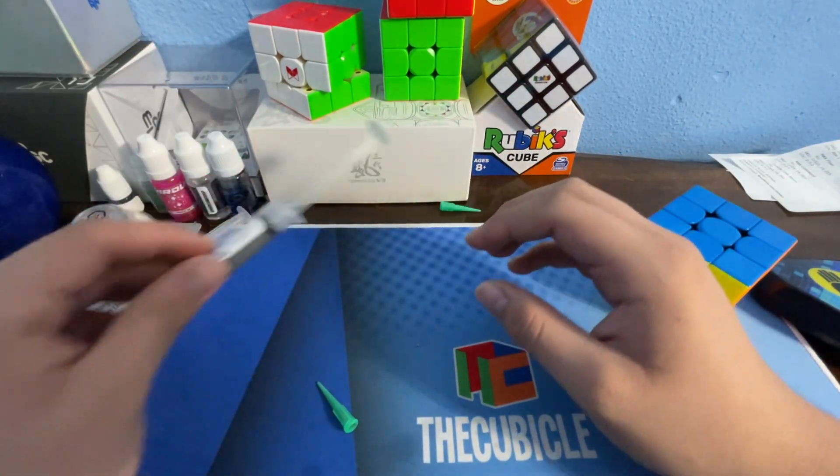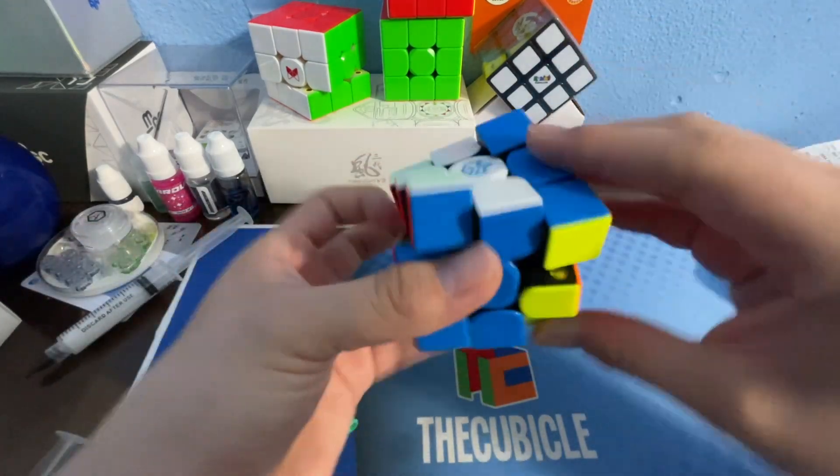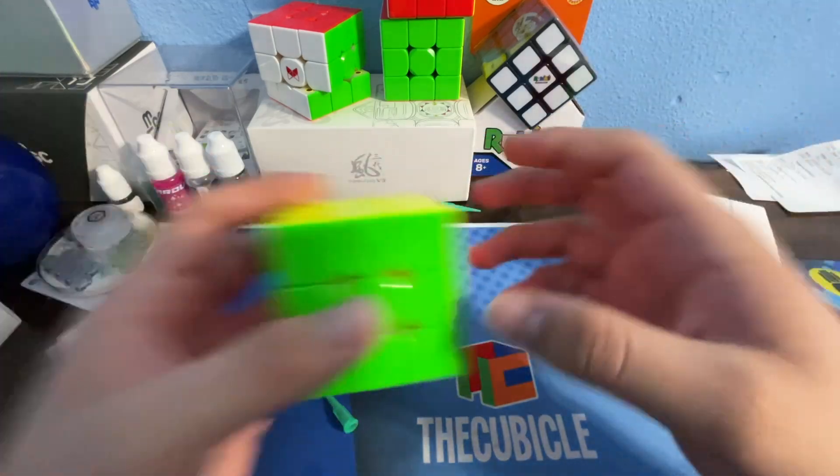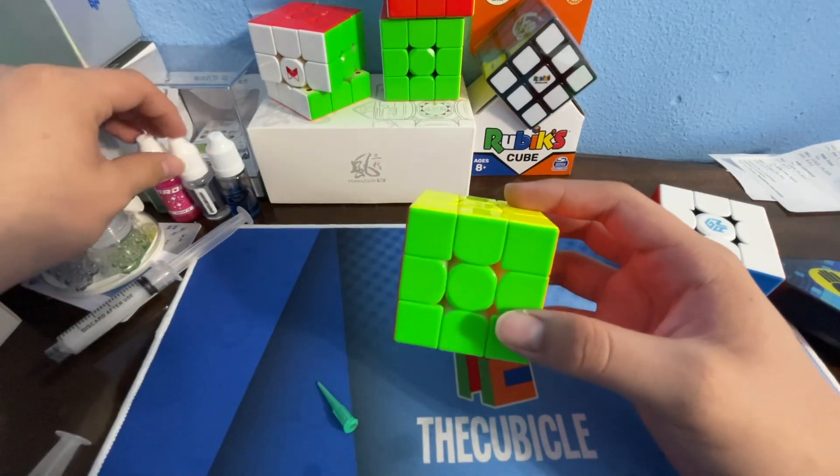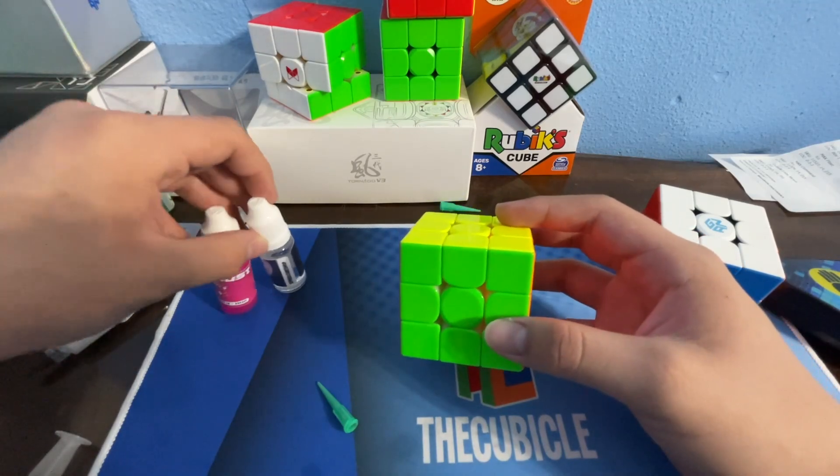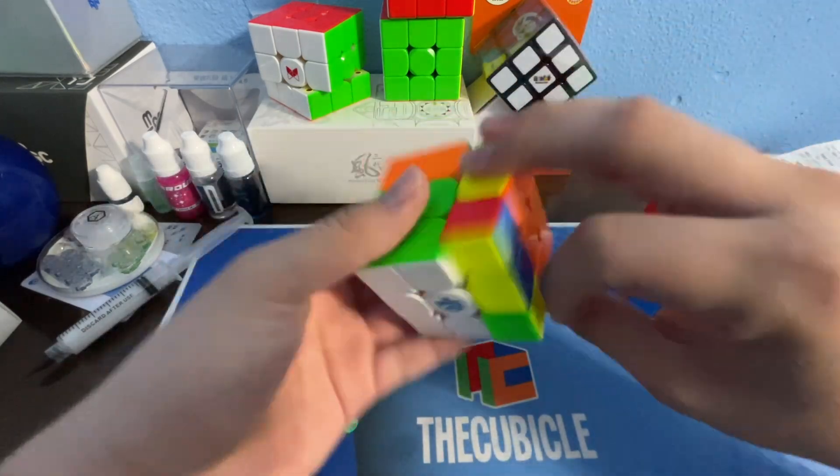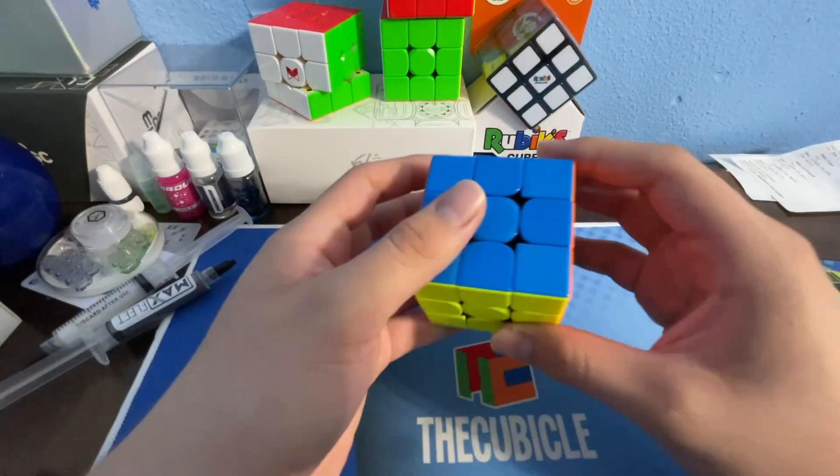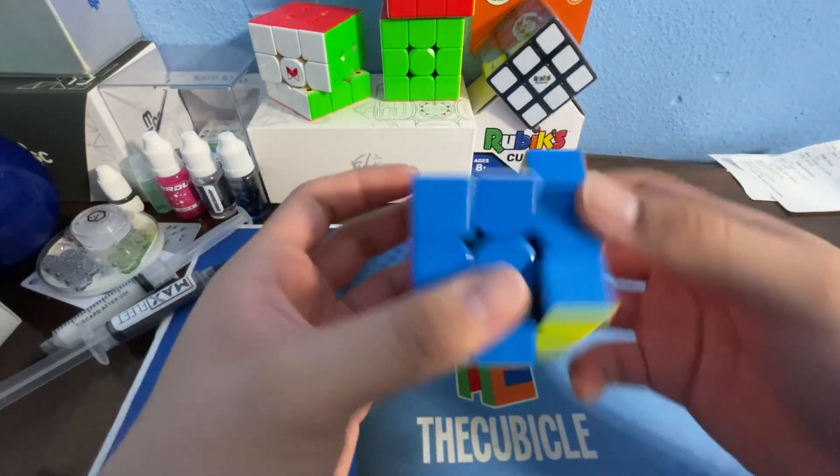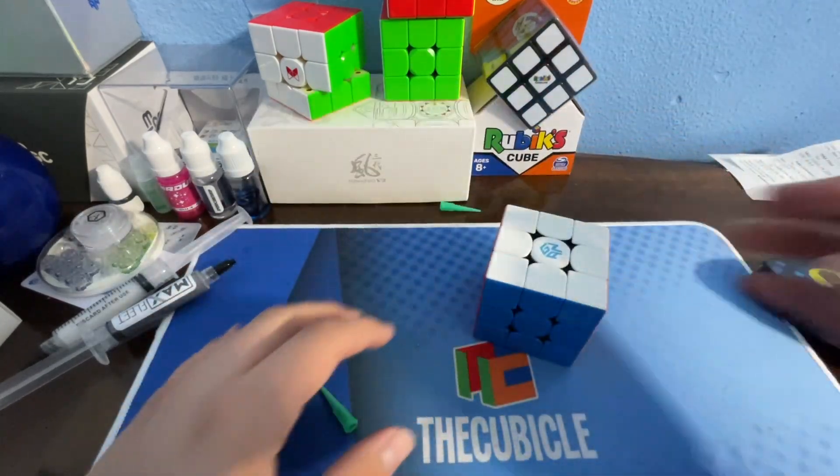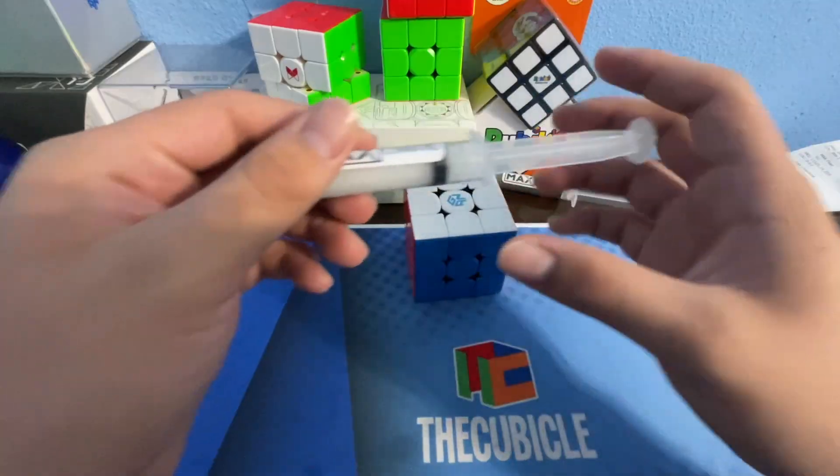However, I'm not sure I'm going to be using this because of the speed it causes my cubes to get. Okay, here's my Gan 11M Pro which is lubed with Lunar and Stardust, the former fastest lube that I had, compared to just one single lube. Oh my goodness gracious.